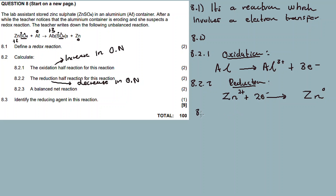Question 8.2.3: Balance the net reaction. Calculate a balanced net reaction. A net reaction is a combination of the oxidation and reduction half reactions — it's the full redox reaction. But you need to make sure the electron transfer is balanced; the electrons lost must equal the electrons gained.